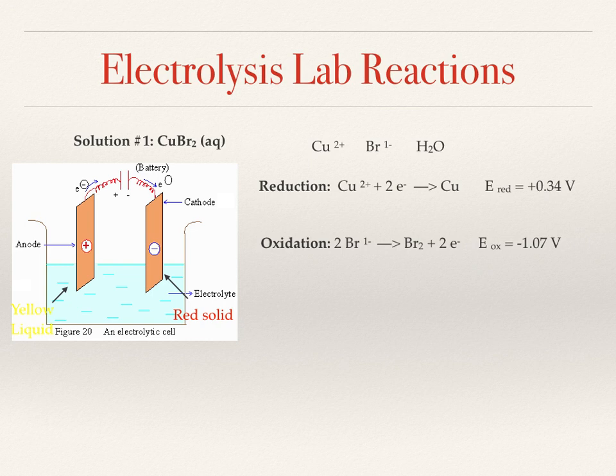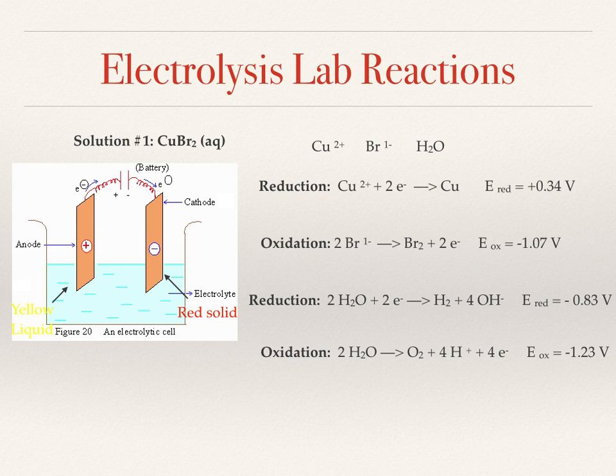The next two reactions that we have are the reduction and the oxidation of water. These are a little bit more different than the norm because you don't just flip around one equation. The third equation from the top there starting with 2 H2O + 2e- will produce hydrogen gas and 4 hydroxide ions. That's a value of negative 0.83 volts.